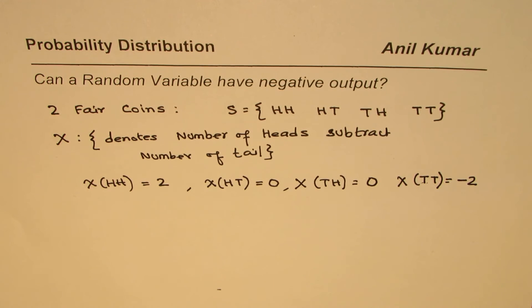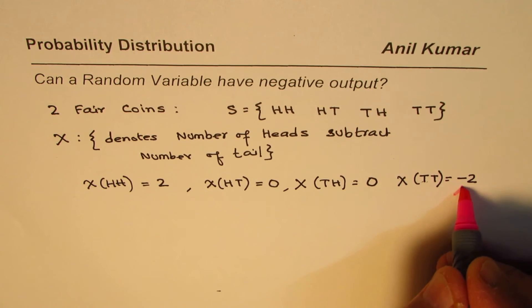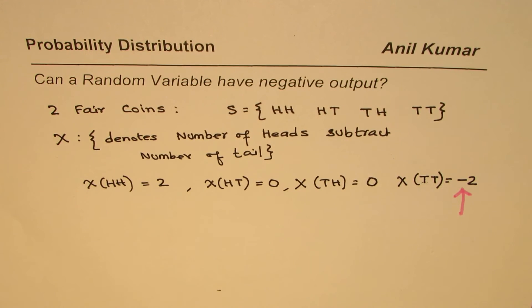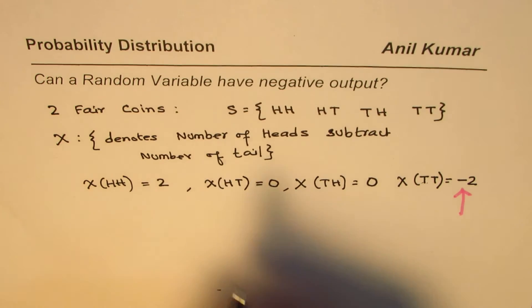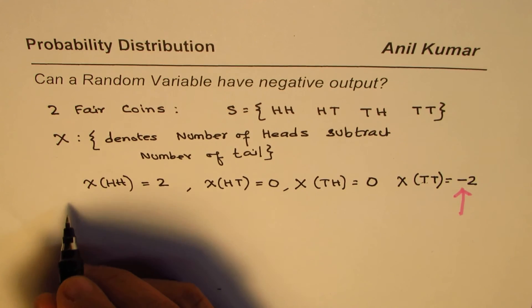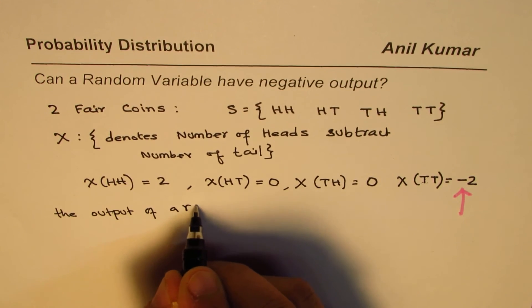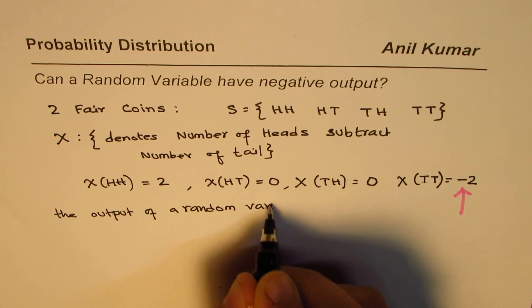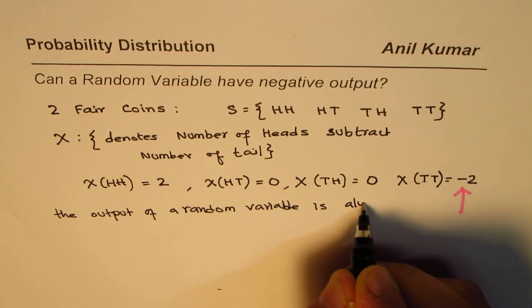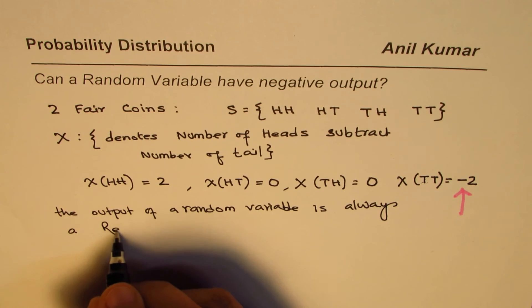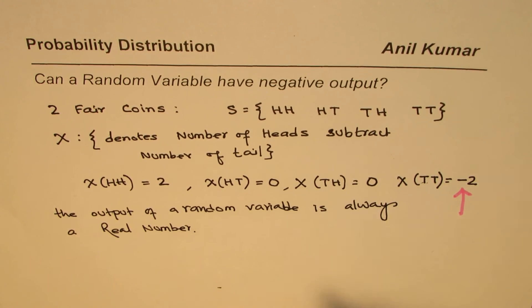We do have an output as a negative number: minus 2. So it is always possible to get the output of a random variable as a negative number. The output of a random variable is always a real number, and real numbers include 0 and negative numbers as well. Therefore, the output of a random variable can be a negative number. I hope the point is clear. Thank you and all the best.